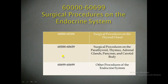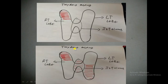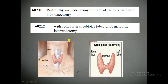Hi everyone. In this session, I am going to explain a few excision procedures on the thyroid gland — partial thyroid lobectomy and total thyroid lobectomy. We will see what the CPT codes are, what exactly the physician will do in these procedures, and why they will perform them. The first is partial thyroid lobectomy, unilateral, with or without isthmectomy — CPT code 60210.